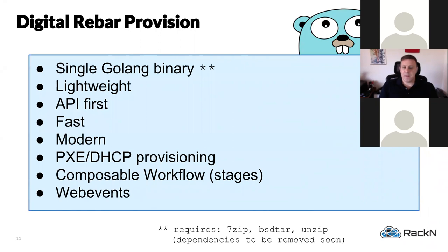That API gives you the ability to integrate with external systems and drive provisioning workflows through what we call our composable workflow — or stages. Stages are what allow us to do a lot of the magic within our composable workflow. At the end of the day, we're a traditional PXE/DHCP provisioning service underneath the hood. We also provide a web event system for consuming information events coming off Digital Rebar Provision, and it's pluggable, allowing us to add plugin functionality to extend capability in different ways.